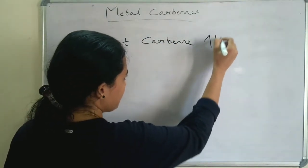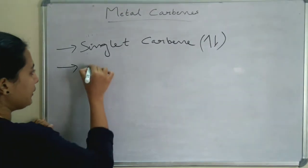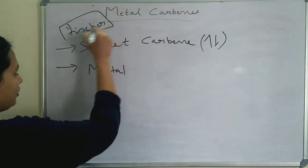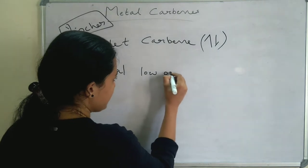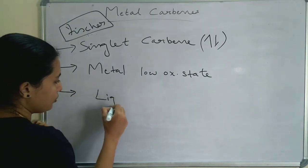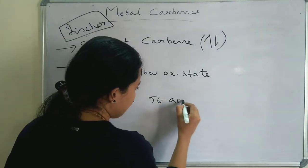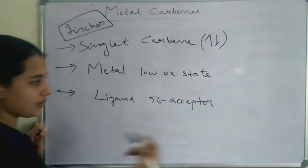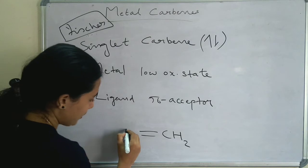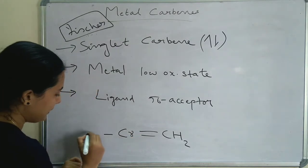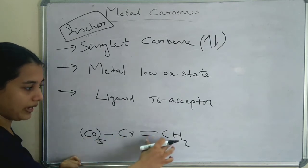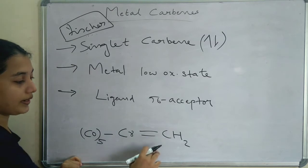In Fischer carbene, the electrons are paired (spin multiplicity = 1). The metal should be in a low oxidation state — this is very important. And the ligands should be pi-acceptor ligands, like CO, CN minus, NO, etc. One example for Fischer carbene is (CO)5Cr=CH2, where chromium metal has 5 CO pi-acceptor ligands and a carbene ligand.